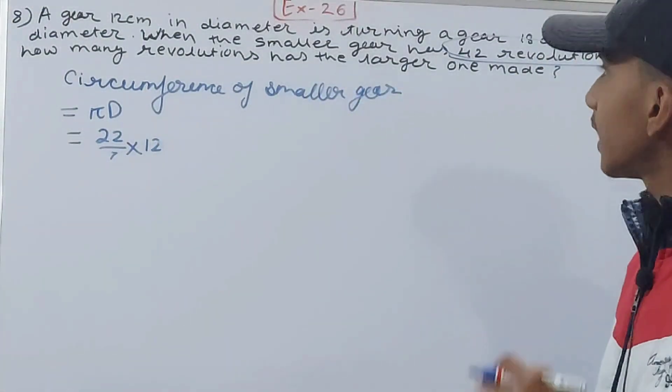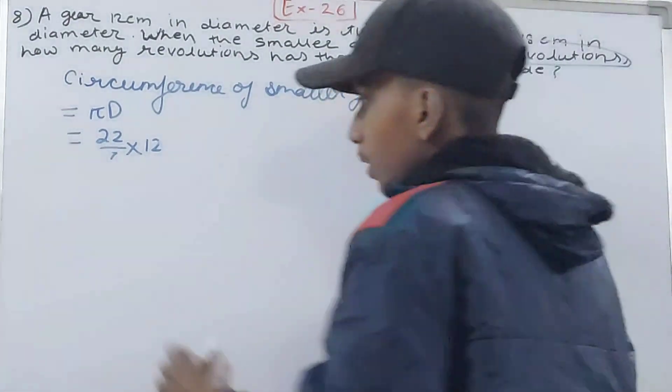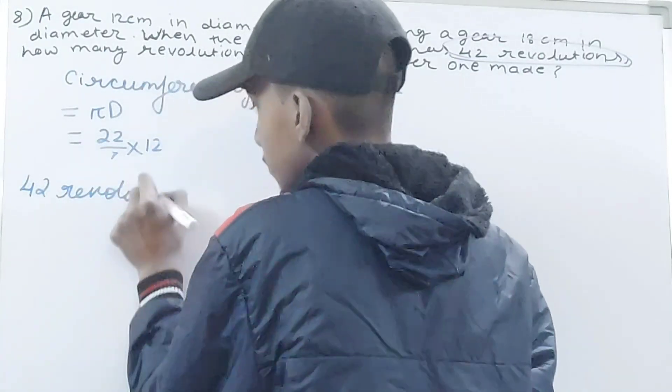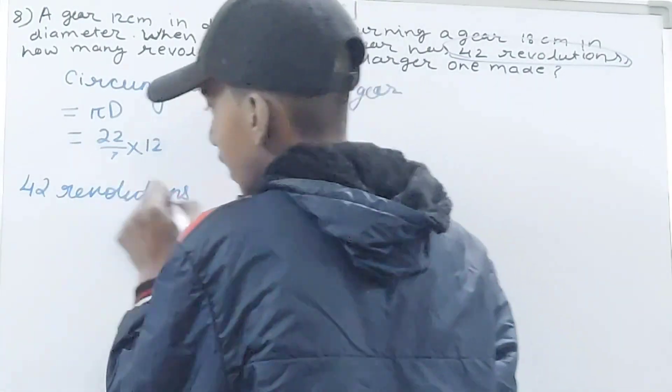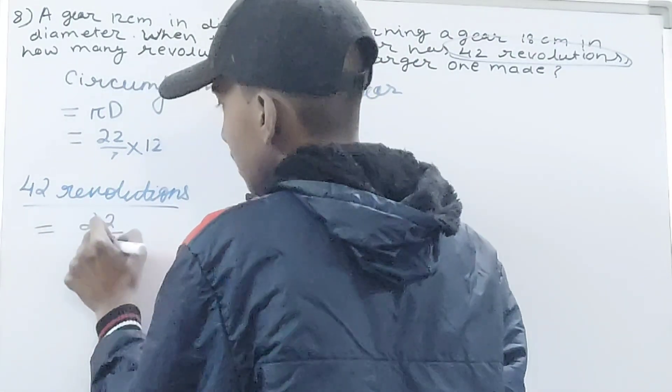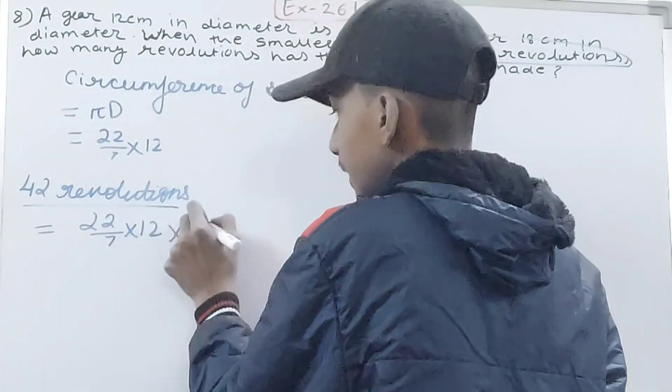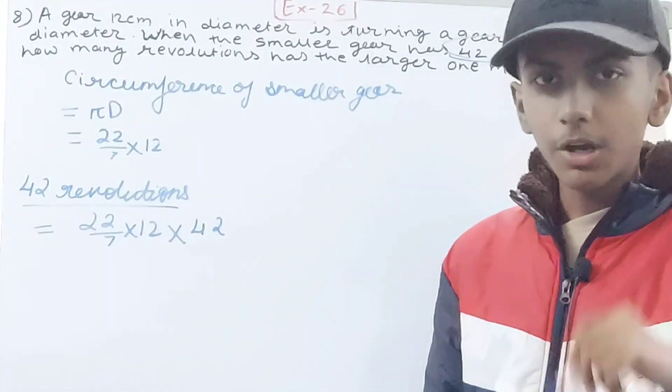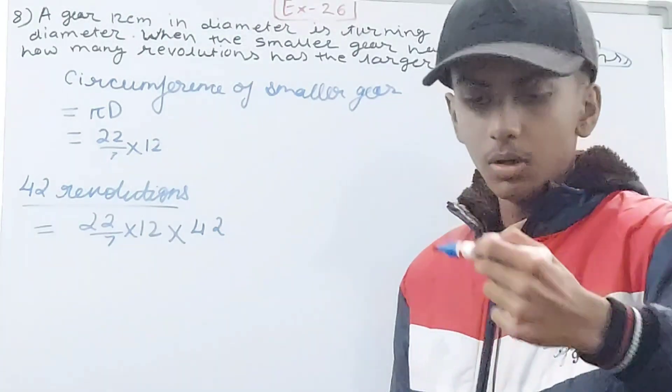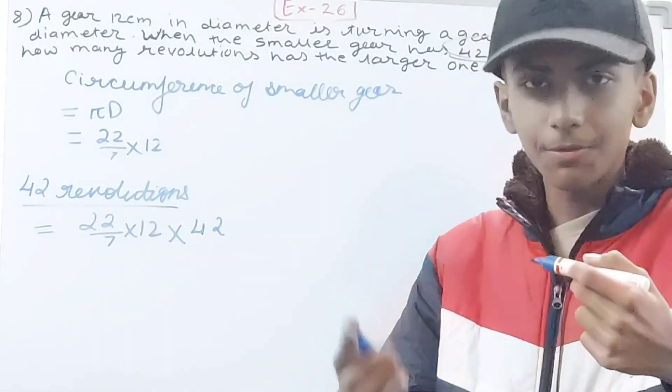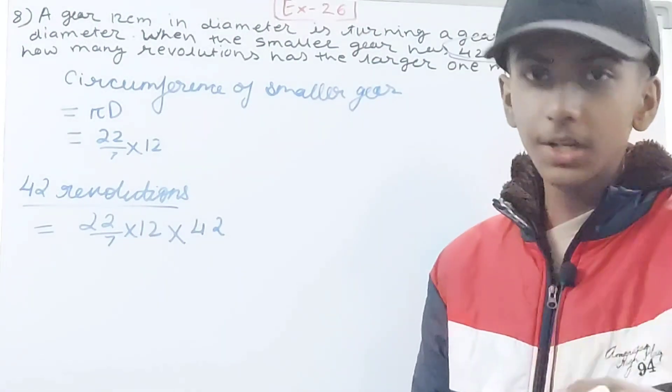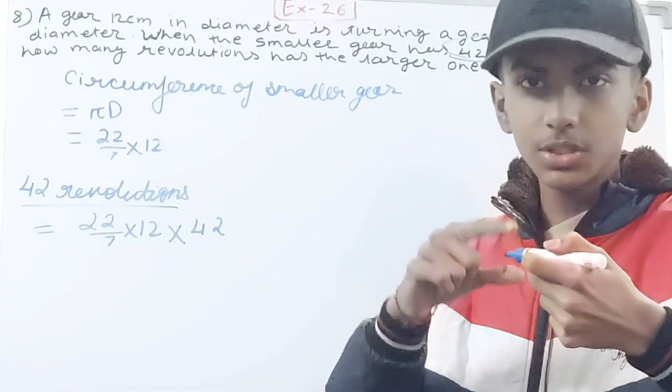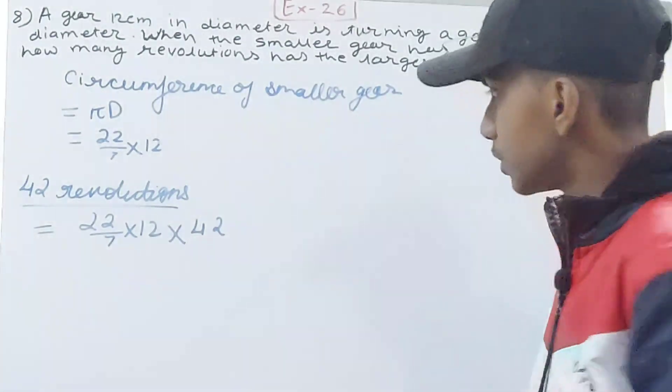When the smaller gear has 42 revolutions, how much distance has it traveled? After 42 revolutions, 22/7 × 12 is the circumference, and × 42 will be the distance that wheel has traveled in 42 revolutions. It will go one time like this, so it has traveled its own circumference. For 42 times, I will multiply the circumference by 42.